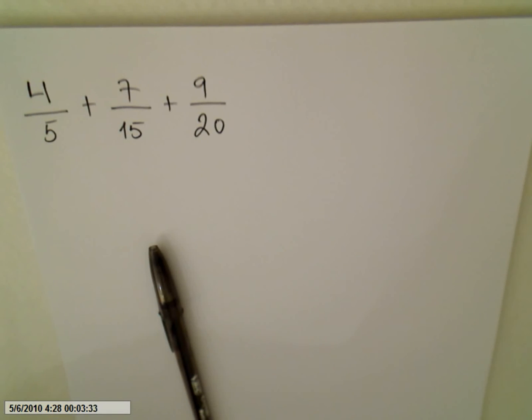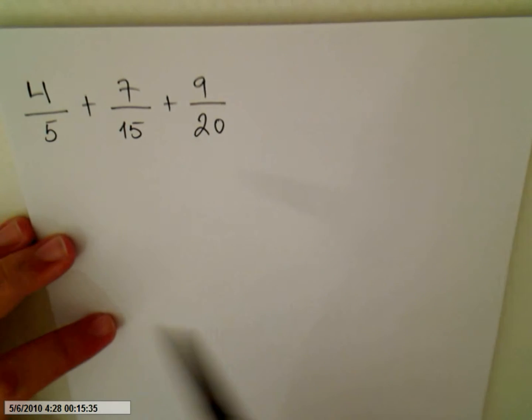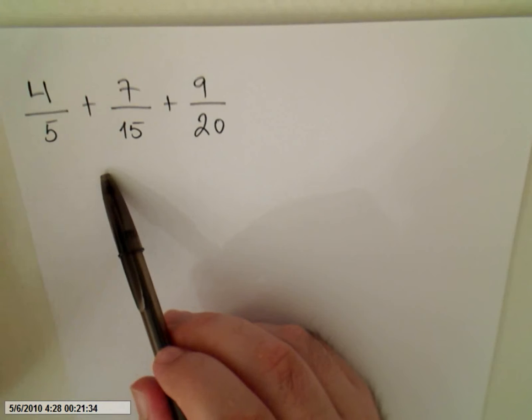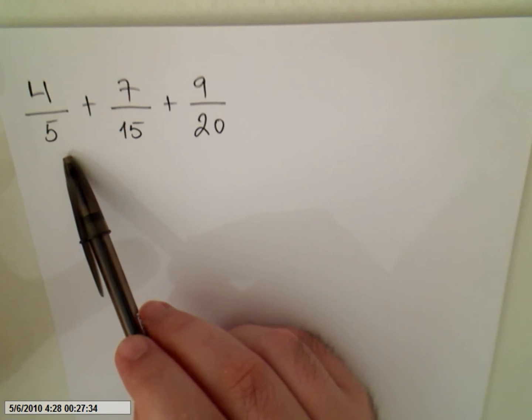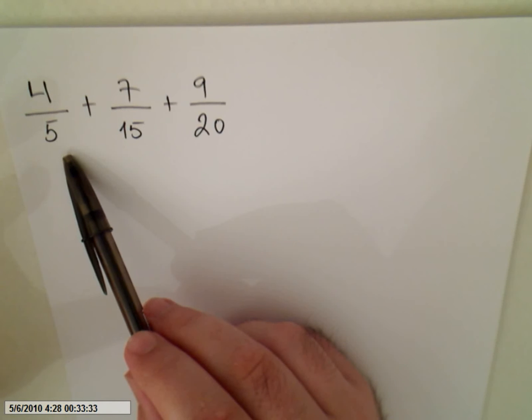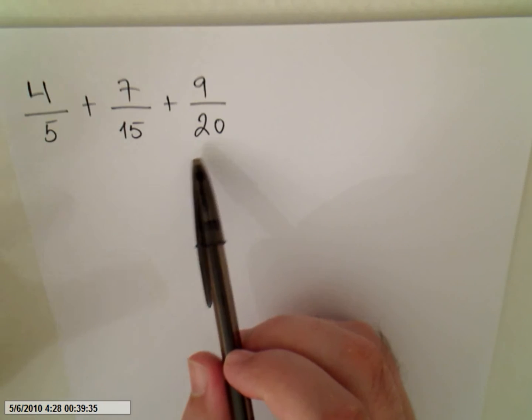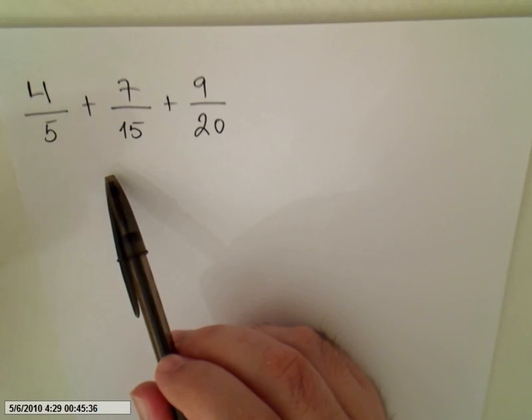This video is about adding more than two fractions. Finding the least common denominator for three or more fractions is more or less the same as finding the least common denominator for two fractions. We have to prime factorize the three denominators, then we will find the least common denominator, and then we have to multiply each fraction by this number over itself.